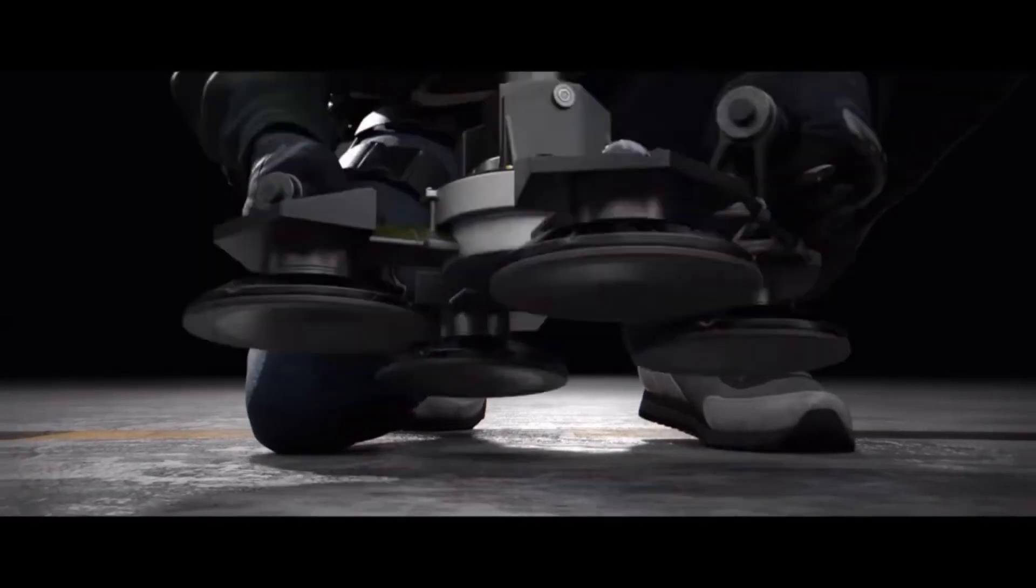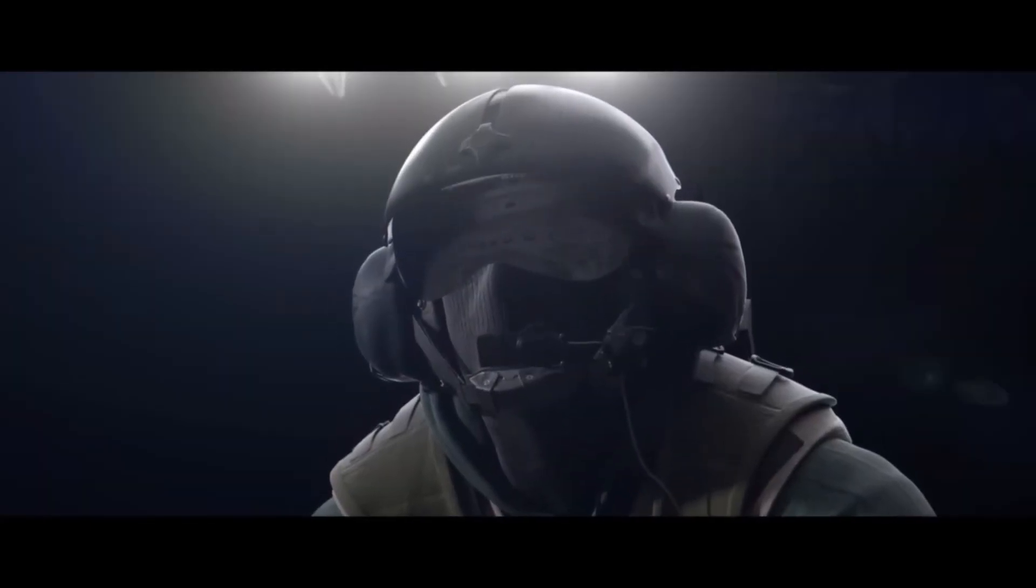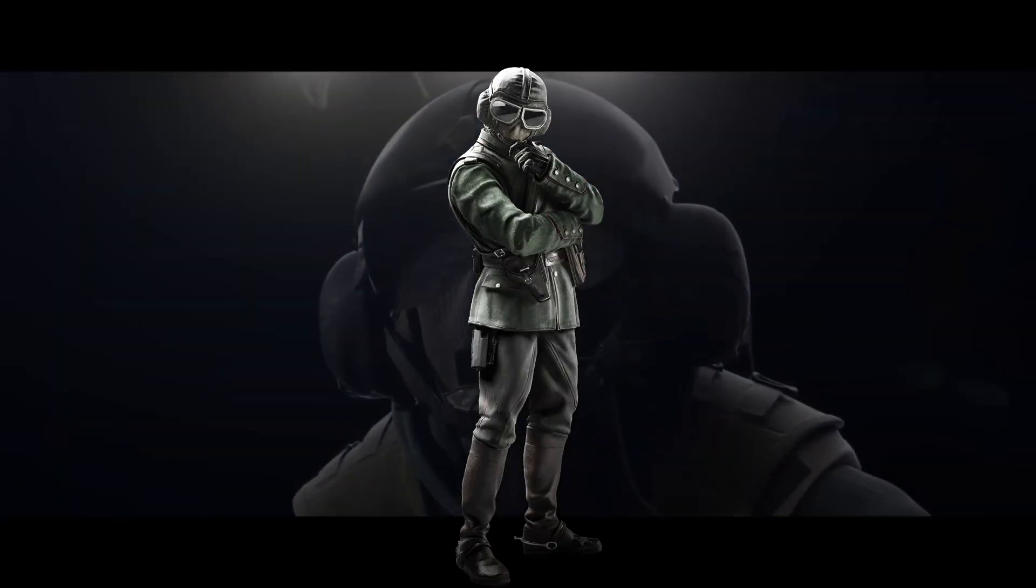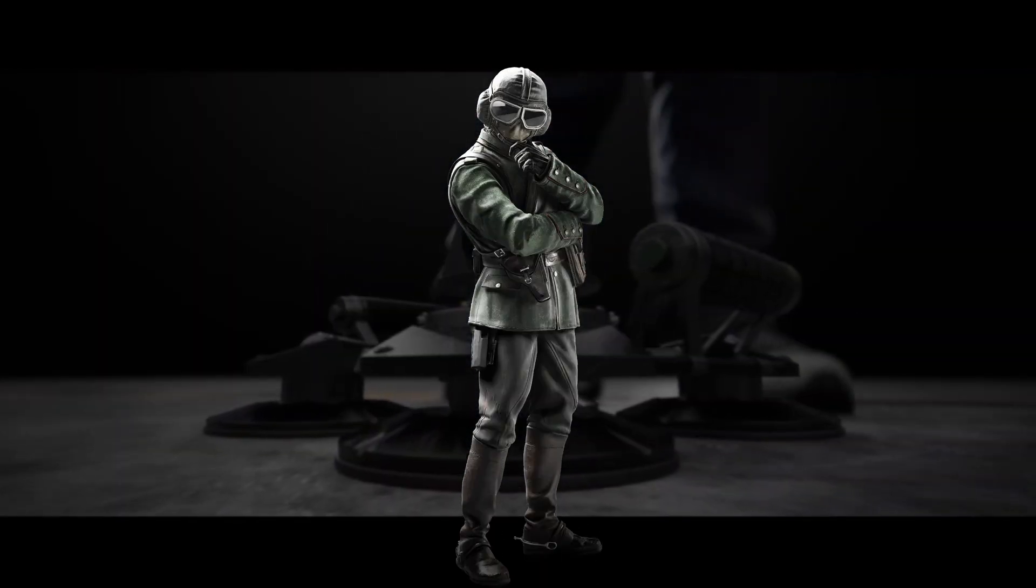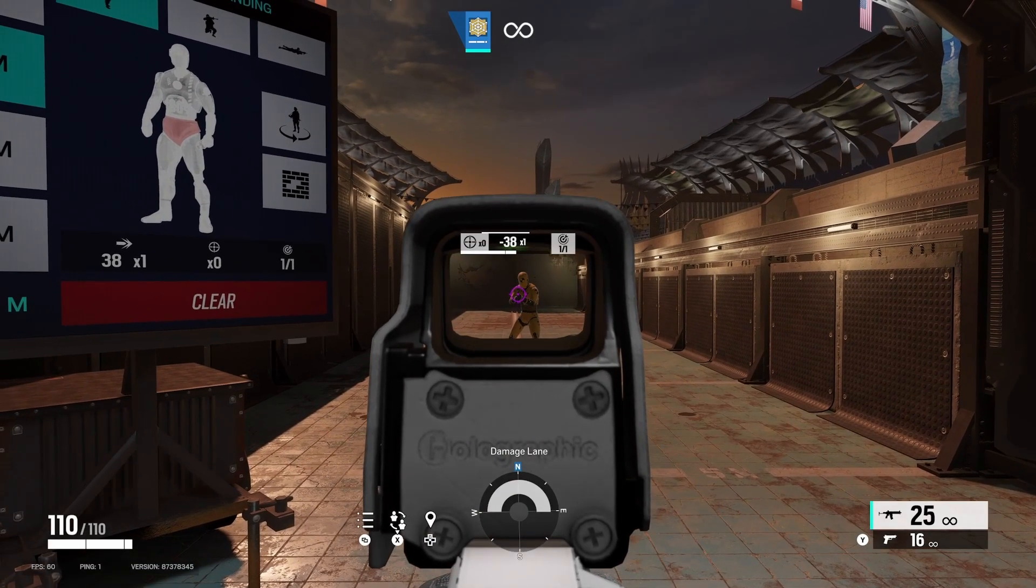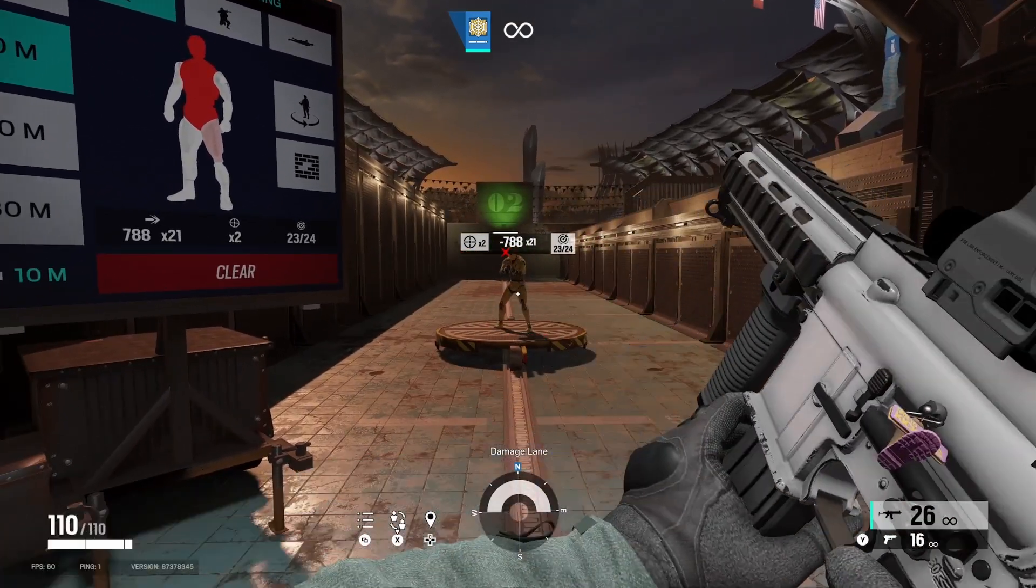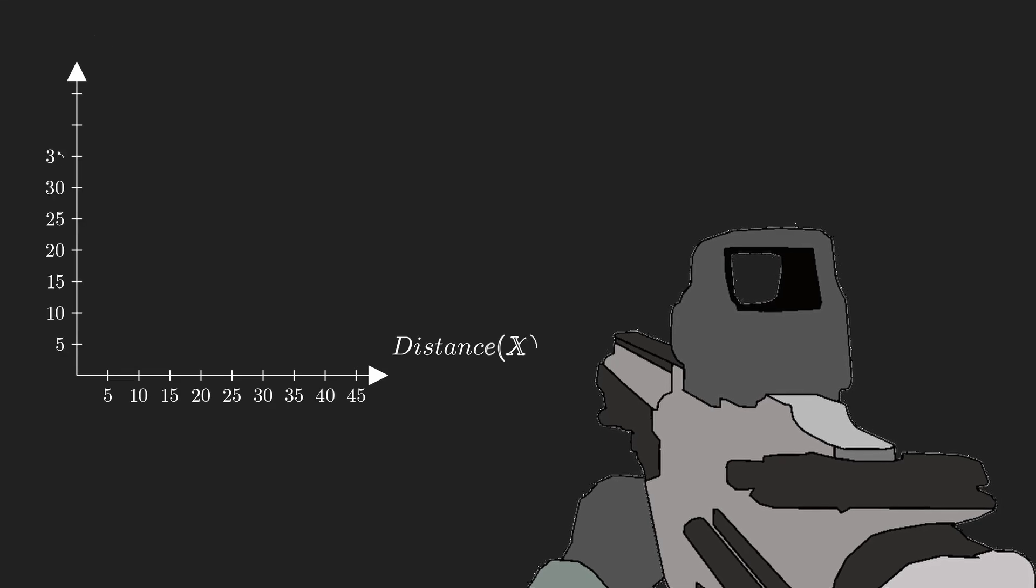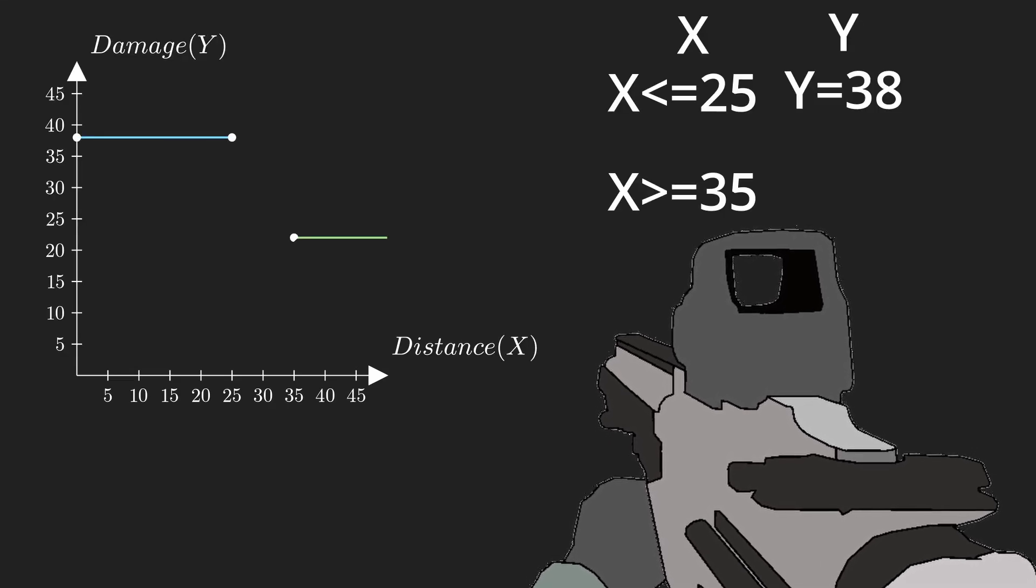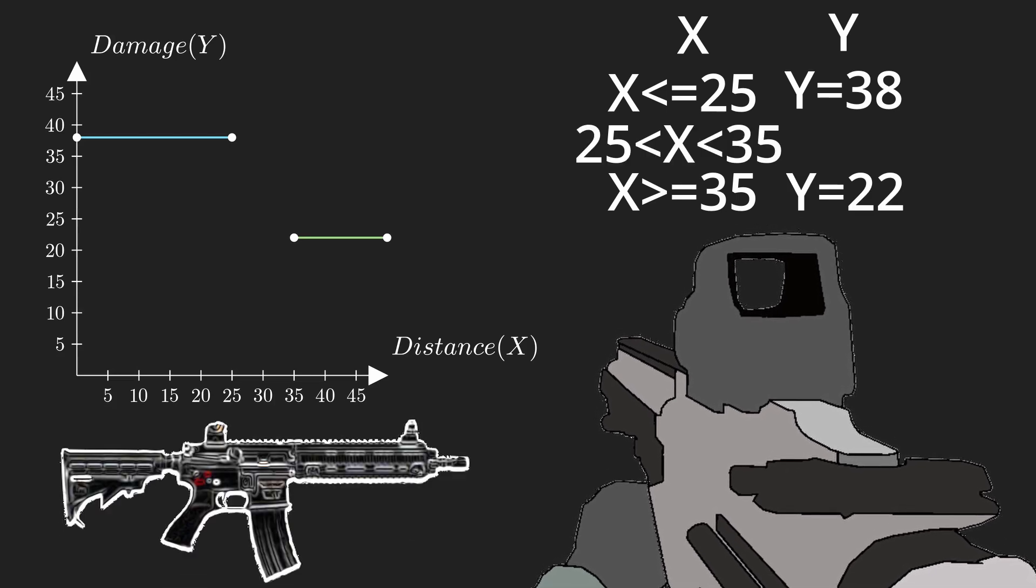This is Rainbow Six Siege, a popular FPS. This is Jaeger, a guy you can use in the game. He uses the gun, the 416C carbine. I did some testing, and got some stats for shooting enemies in the body. Let's put it on a graph. Between 0 and 25 meters, he does 38 damage, and above 35 meters, he does 22 damage. The issue isn't these values, it's the ones in between.